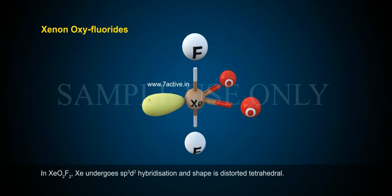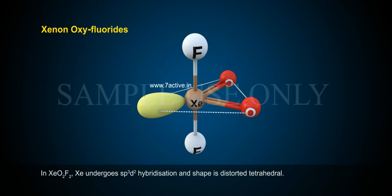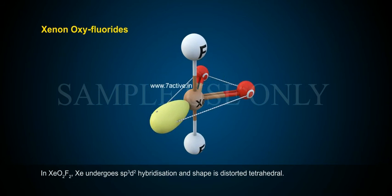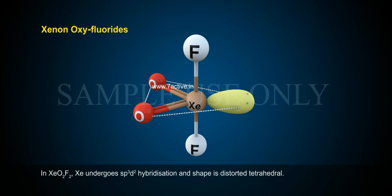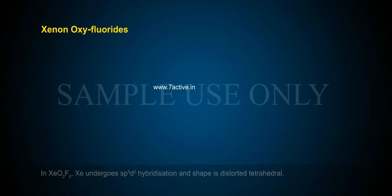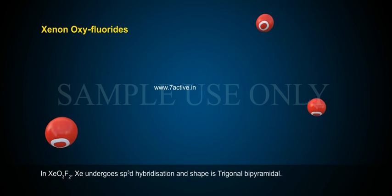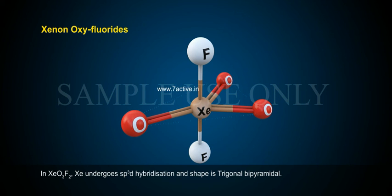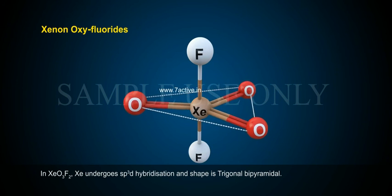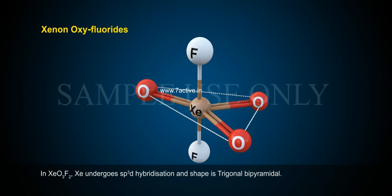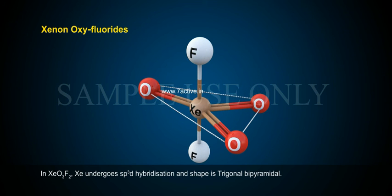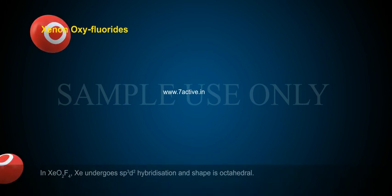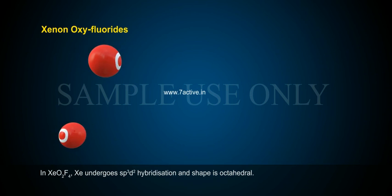In XeO2F2, Xe undergoes sp3d2 hybridization and the shape is distorted tetrahedral. In XeO2F4, Xenon undergoes sp3d2 hybridization and the shape is octahedral.